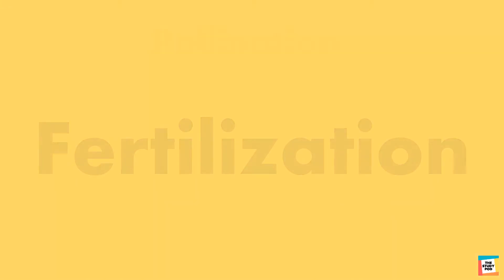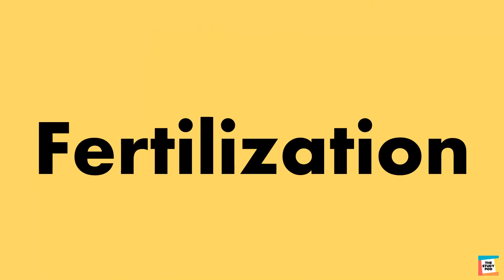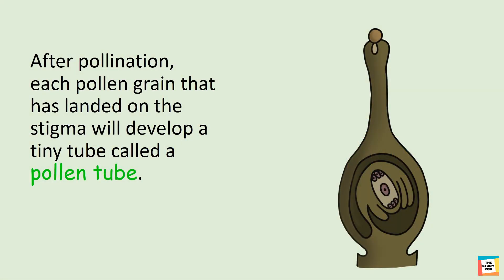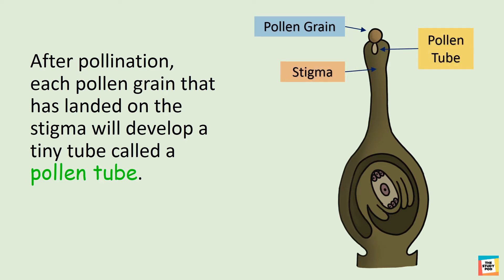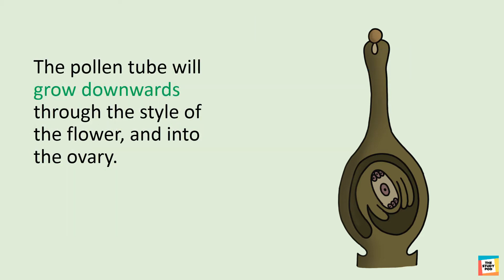Now let's discuss the next step, which is fertilization. After pollination, each pollen grain that has landed on the stigma will develop a tiny tube called a pollen tube. The pollen tube will grow downwards through the style of the flower and into the ovary.